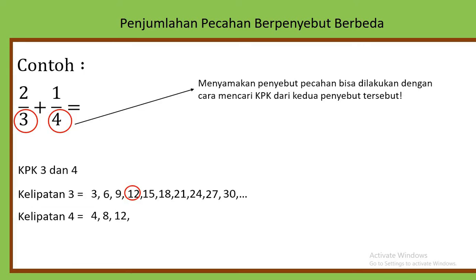Perhatikan angka yang sama antara kelipatan 3 dan 4. Ini adalah angka 12, sudah ibu lingkari merah. Kalau menemukan angka yang sama berikutnya, yang dipakai adalah angka yang sama paling kecil. Jadi KPK dari 3 dan 4 adalah 12.